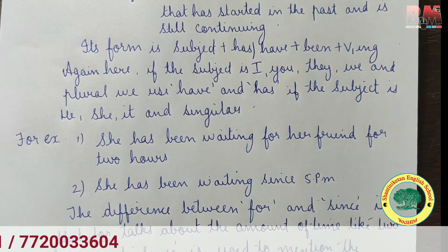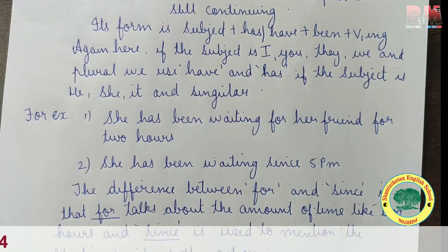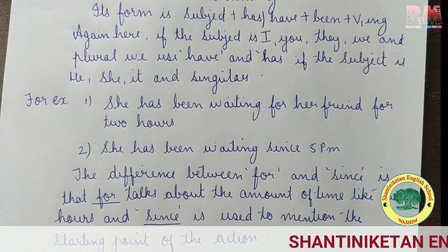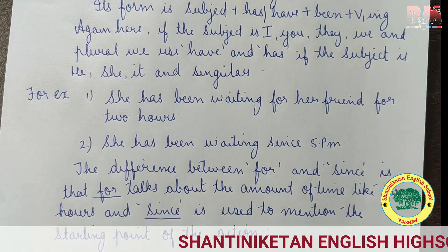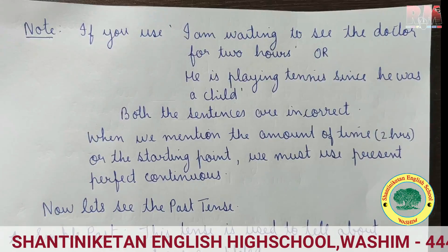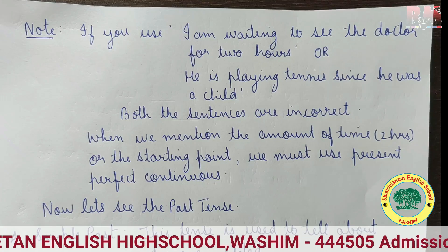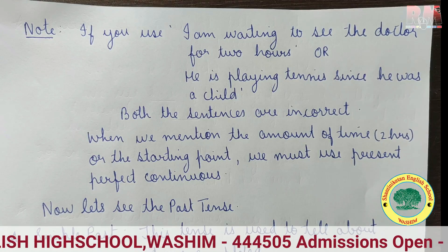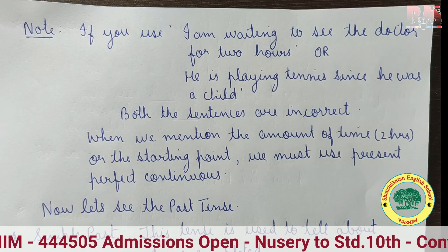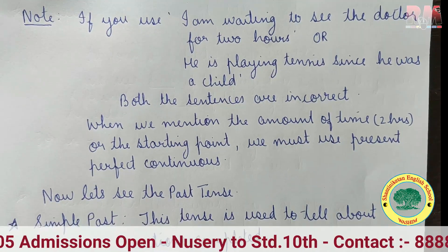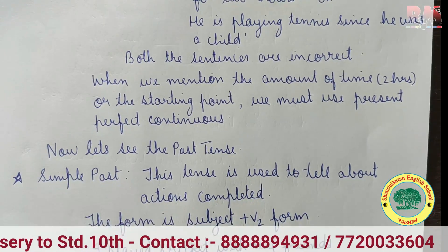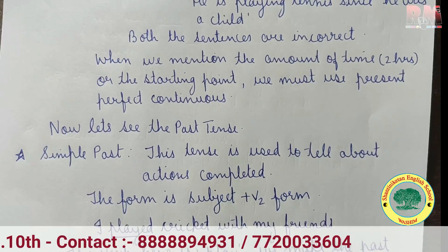See the difference between 'for' and 'since' used in the above sentences. 'For' talks about the amount of time, like two hours. 'Since' is used to mention the starting point of an action. Here is an important point: sentences like 'I am waiting to see the doctor for two hours' or 'He is playing tennis since he was a child' are both incorrect. When we mention an amount of time or a starting point, we must use present perfect continuous tense.